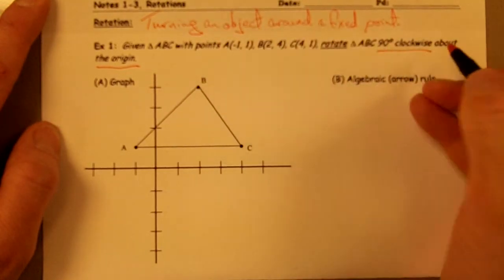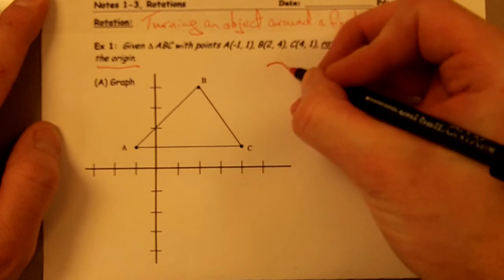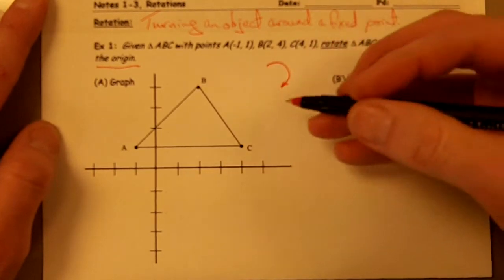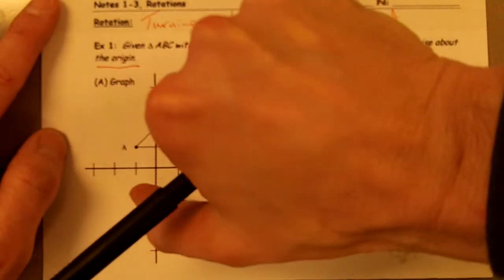And we want to go 90 degrees clockwise. So clockwise is this direction, and 90 degrees is like a quarter turn.